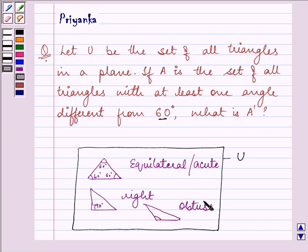So it is saying that set A is the set of all triangles with at least one angle different from 60 degrees. So here, there is a possibility we have one angle which is different from 60 degrees, that is 90 degrees.